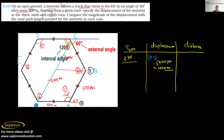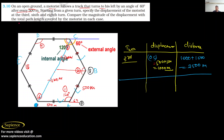Displacement is the shortest distance between start and end points. For the 3rd turn, displacement is 1000 meters. The total distance covered: the motorcyclist travels 3 sides of 500 meters each, so distance = 500 + 500 + 500 = 1500 meters.